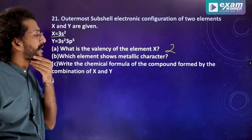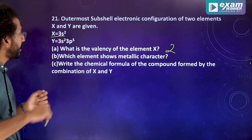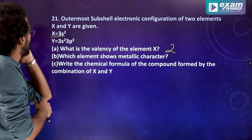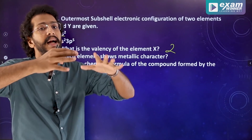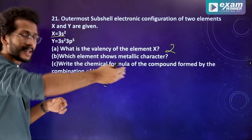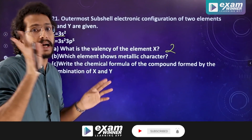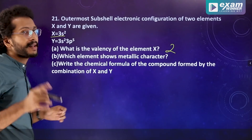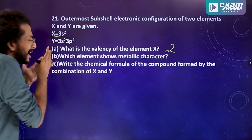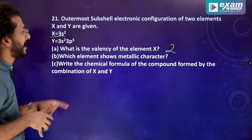Which element shows metallic character? X has configuration 3s2, which is the general configuration of alkaline earth metals, so X shows metallic character. Y has 3s2 3p5, giving 7 valence electrons and valency of 8 minus 7 equals 1.